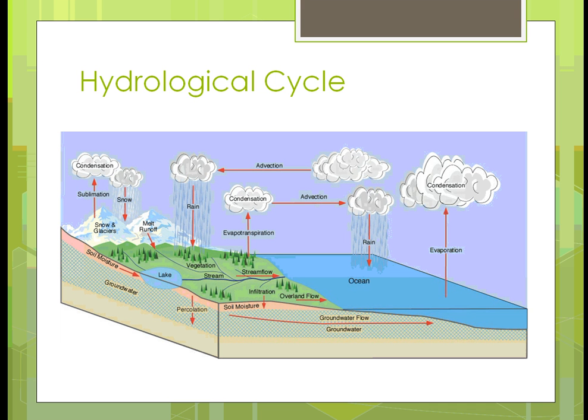From glaciers, you get runoff when it gets warm enough — water runs down into streams and gives water to plants. It can go from streams into lakes, lakes into oceans, or down into the ground as groundwater through percolation. That's where a lot of our irrigation water comes from. Some flows over land and runs off rather than going into soil moisture. If you come back and look at the hydraulic cycle diagram later, it does a good job explaining where that water is coming from.